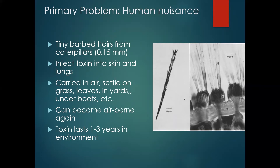The caterpillars shed those hairs readily, and also when caterpillars shed their skin to grow a little bigger, they shed that skin with all the associated toxic hairs. Those hairs can settle on leaves, in unused parts of your yard like under decks and boat trailers, and can become airborne again. Typically if they're out in the yard or woods, precipitation like rain and snow does help incorporate them into the soil and they become a non-issue. But it's dangerous in dry, sheltered areas — that's where the toxin can last one to three years in the environment.